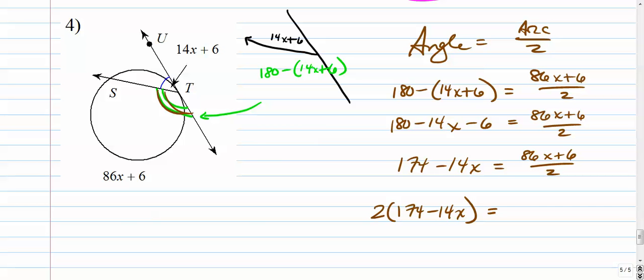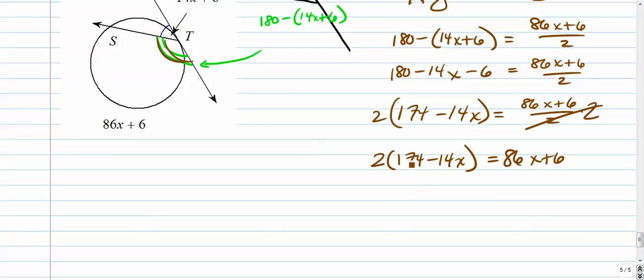So I think the easiest way to get rid of that 2 in the denominator is multiply both sides by it. When you multiply both sides by that 2, they cancel. So over here we have to put it in parentheses. And that's, let's see, 348 minus 28x equals 86x plus 6. I'll add 28x to both sides. That's 114x plus 6 equals 348.